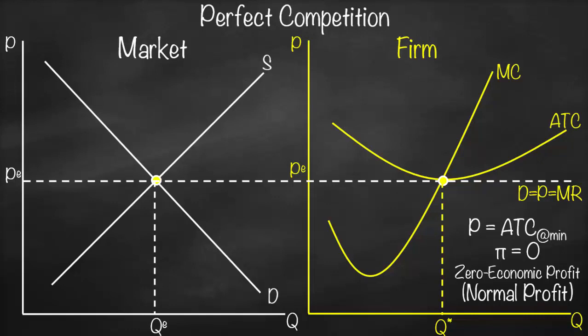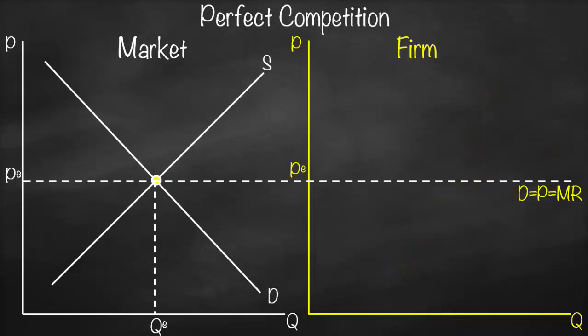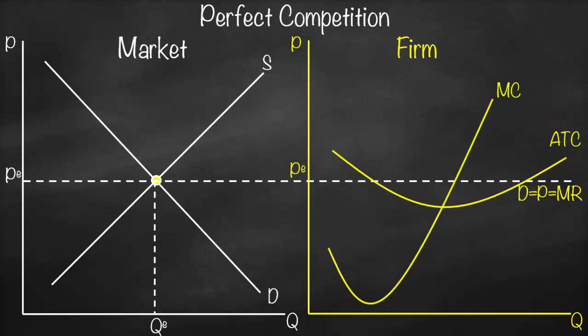But there are two other scenarios: either price is bigger than average total cost, or price is lower than average total cost. In the second scenario, let's draw our average total cost and marginal cost curves, where marginal cost intersects average total cost at its minimum. Our profit-maximizing output is where marginal revenue equals marginal cost.